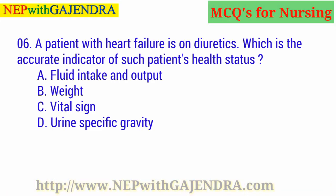A patient with heart failure is on diuretics. Which is the accurate indicator of such a patient's health status? A. Fluid intake and output. B. Weight. C. Vital signs. D. Urine specific gravity. The right answer is B: Weight.